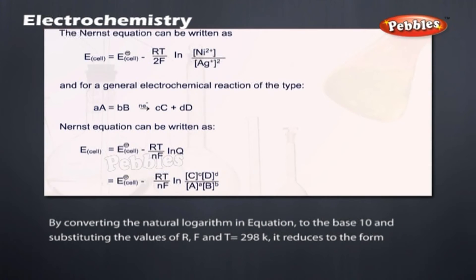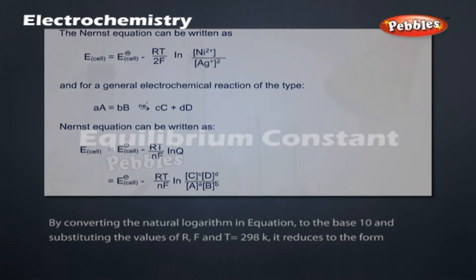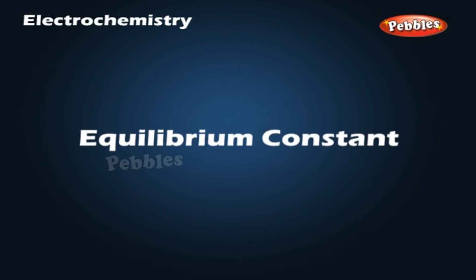By converting the natural logarithm in equation to the base 10 and substituting the values of R, F and T = 298 K, it reduces to the form equilibrium constant.